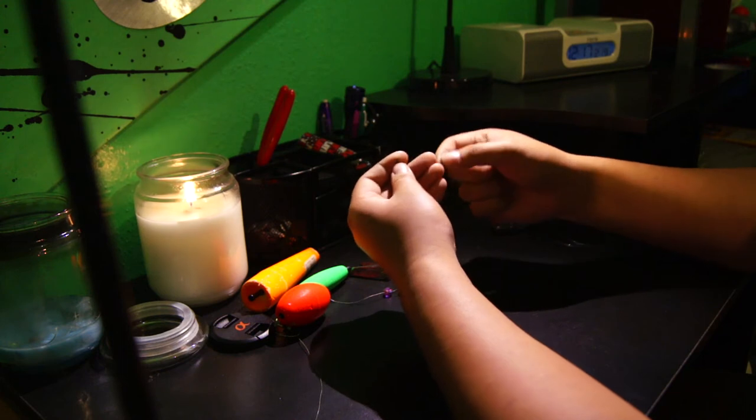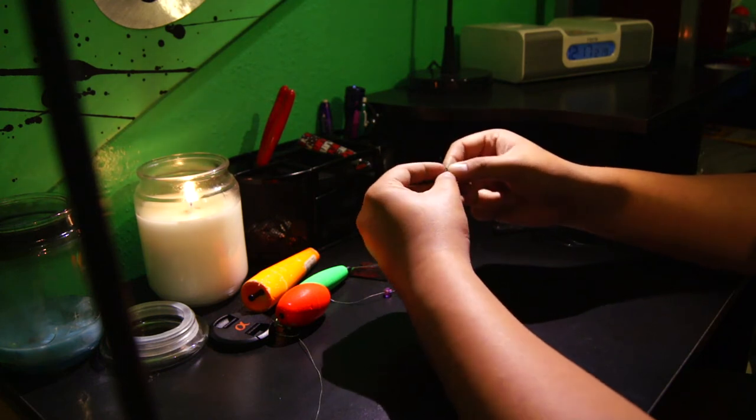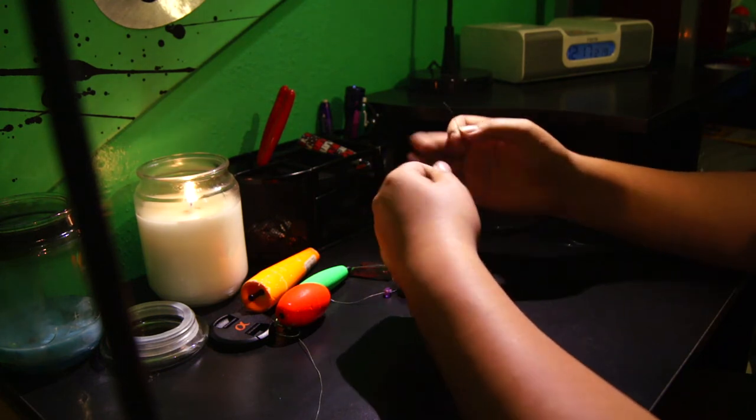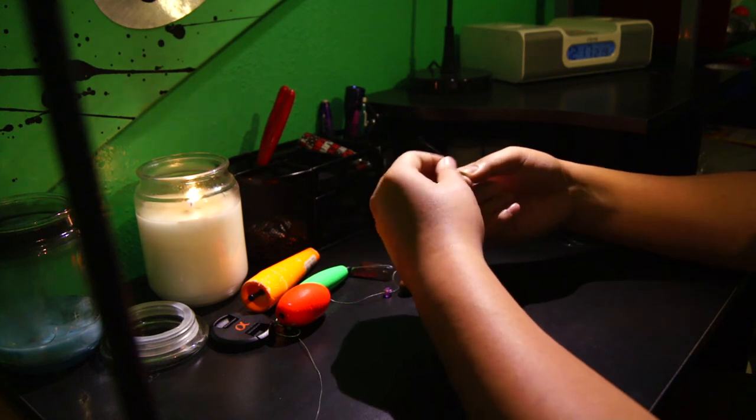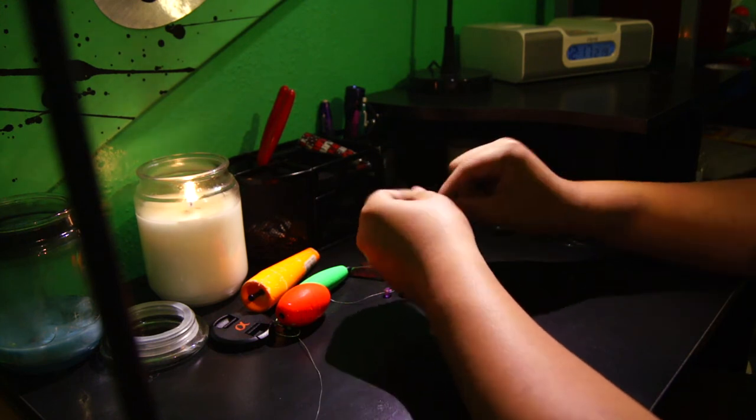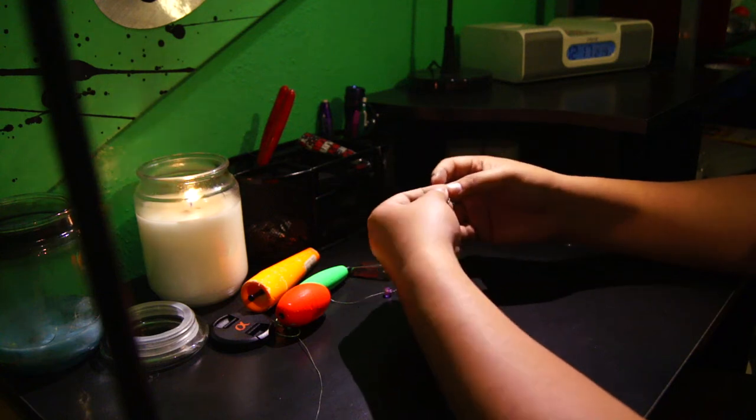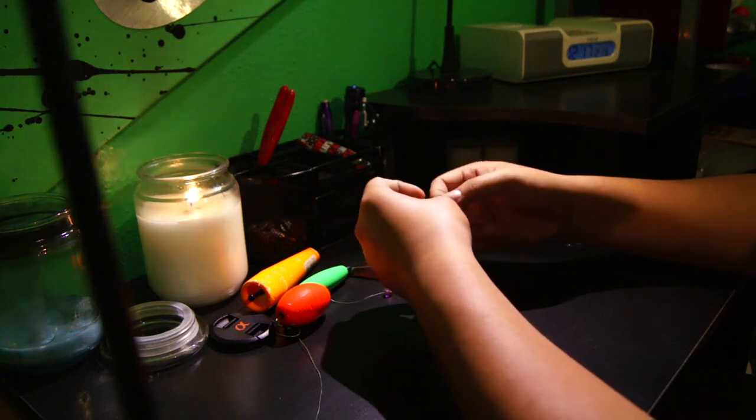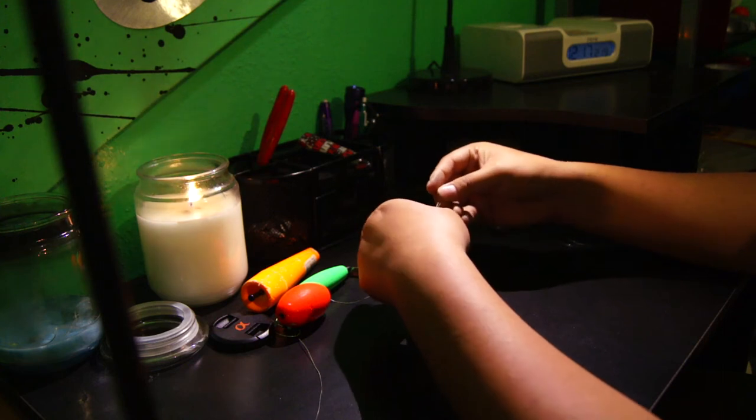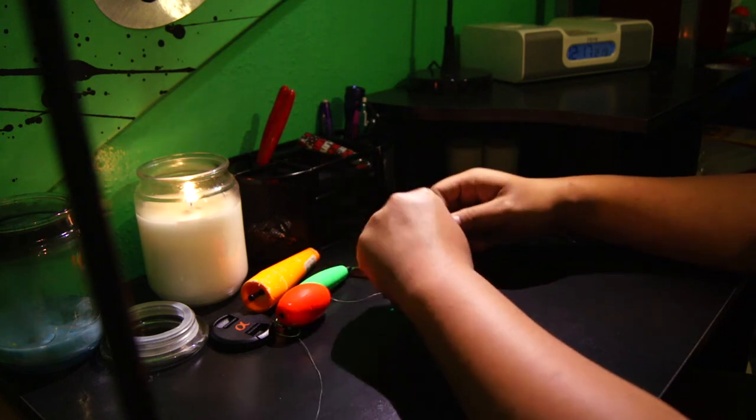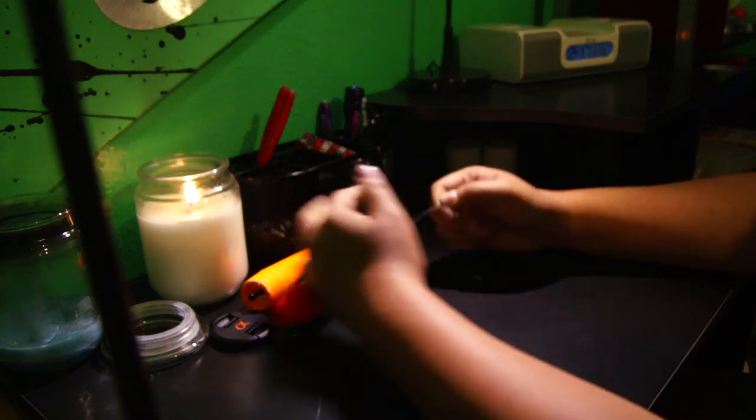The next part, you just tie it to a black swivel. Whatever kind of swivel you're going to be needing. I'm just using regular swivel I found somewhere in my tackle box. Just do a quick knot. Make sure it's nice and tight.